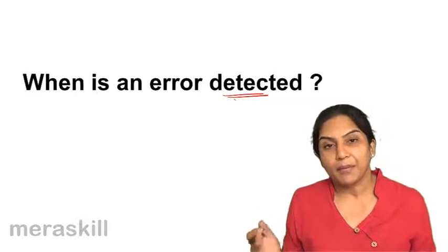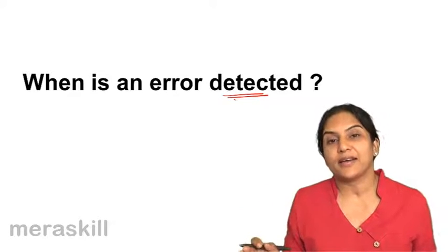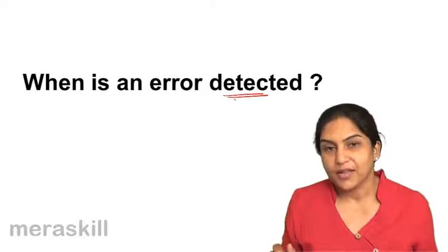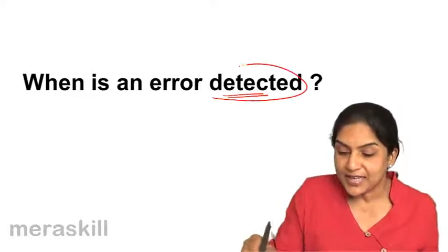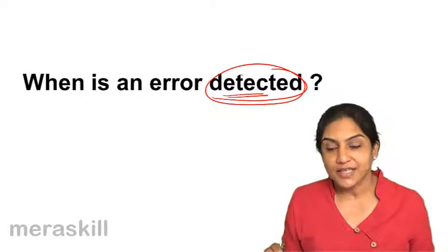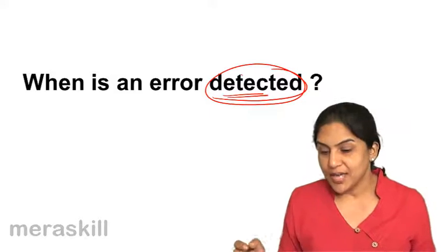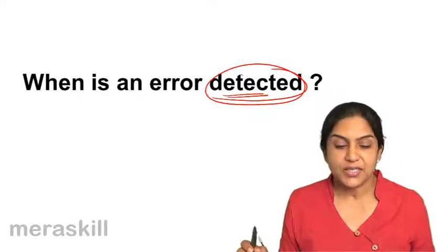Thirdly, we may not be able to find the errors at all in the current year. We detect the error only in the next accounting year. The accounting treatment, depending on when the error is detected, would be different, and we will now discuss the accounting treatment at each of these stages.